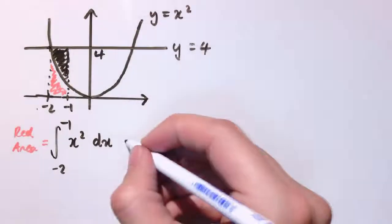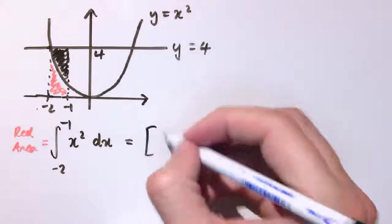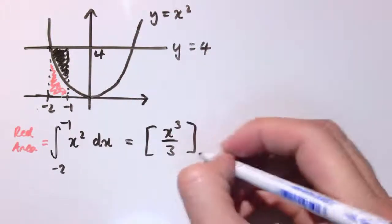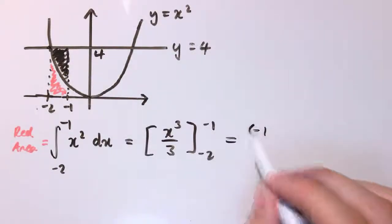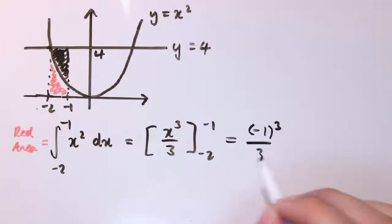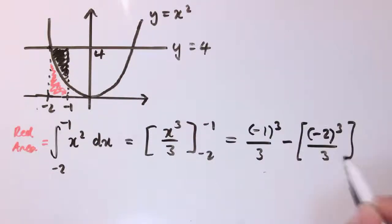So firstly, this area, I integrate it to get x cubed over 3 between minus 2 and minus 1. And when I substitute in minus 1, I get minus 1 cubed over 3. And now I subtract what I get when I put in minus 2. So that's minus 2 cubed over 3. So minus 1 cubed is minus 1. So this is minus 1 third. Minus, this is minus 8 over 3. So that's plus 8 over 3. So this gives me 7 thirds. That's the red area.